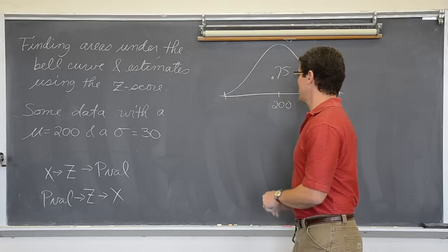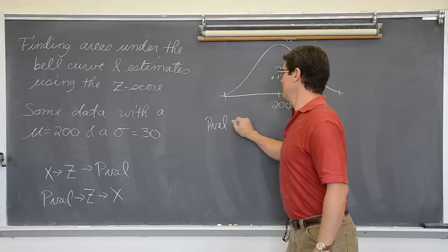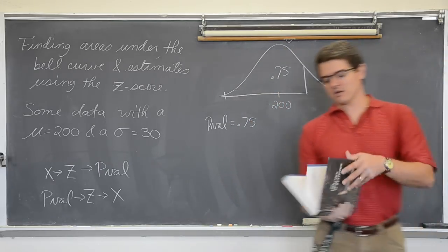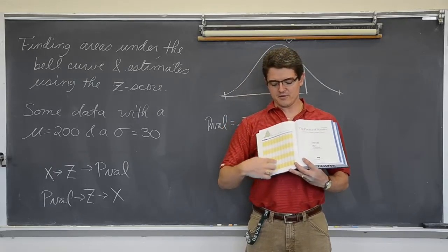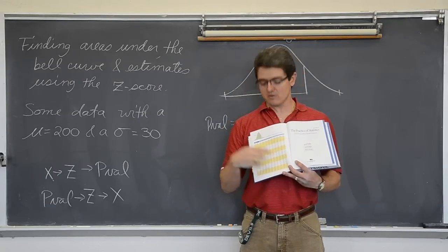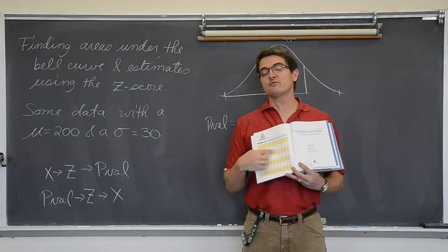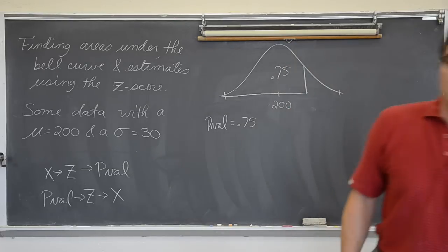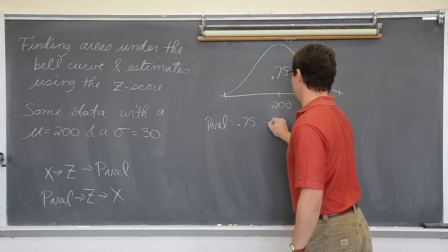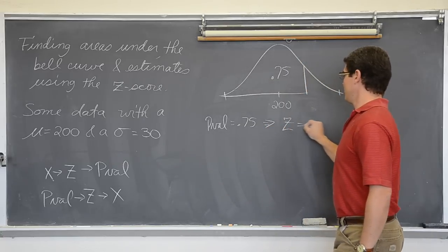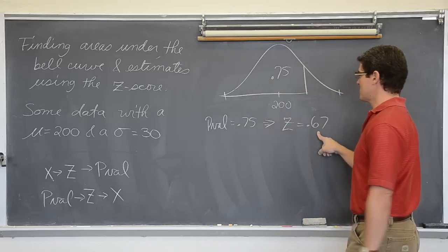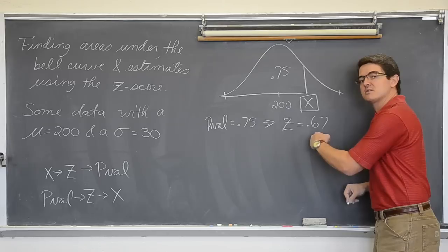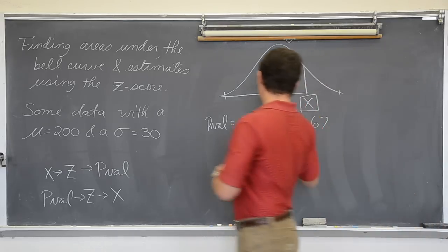So q3, well, if my p-value is .75, I am going to take my z-score chart and look in the body of the chart, because that is where the areas under the bell curve are. I am going to look in the body of the chart and find as close as I can to .75. So if I do that, that will give me a z-score of .67. So this statistic, which we are about to find, is .67 standard deviations to the right of the mean.